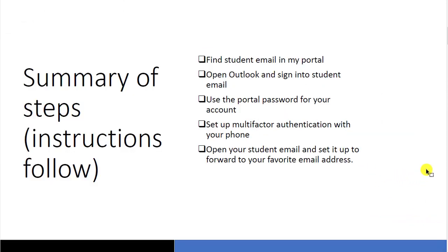Here's a summary of the steps we're going to be doing today. We're going to find the student email in your portal, open the Outlook program and sign in to student email, use your portal password for your account, set up multi-factor authentication using your phone, and then open your student email and set it to forward to your favorite email address. This forwarding will be an optional step.